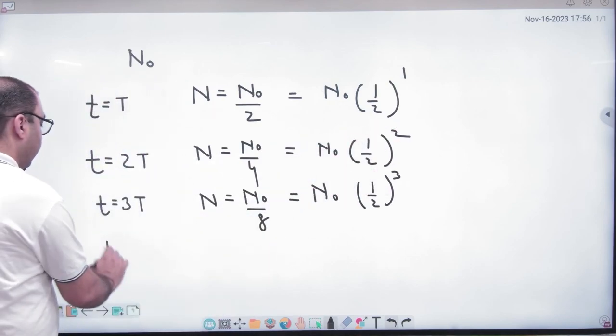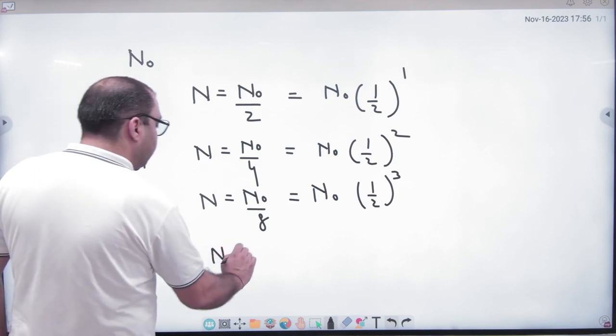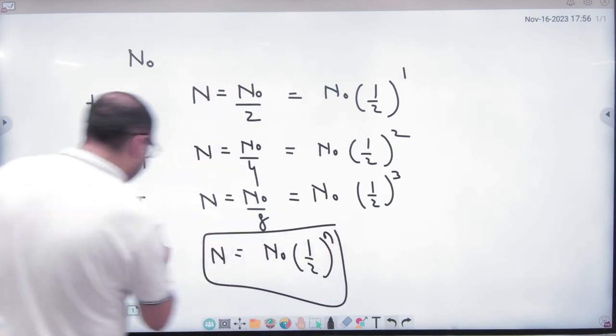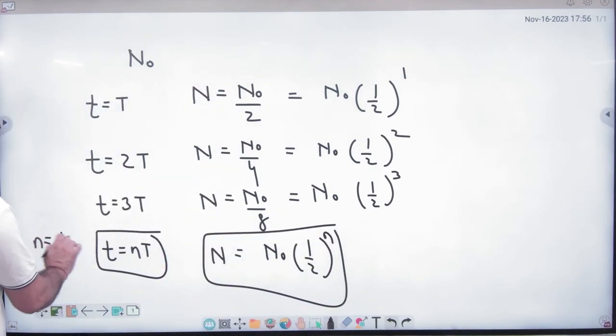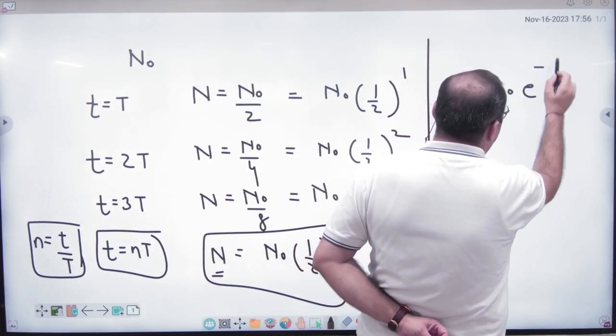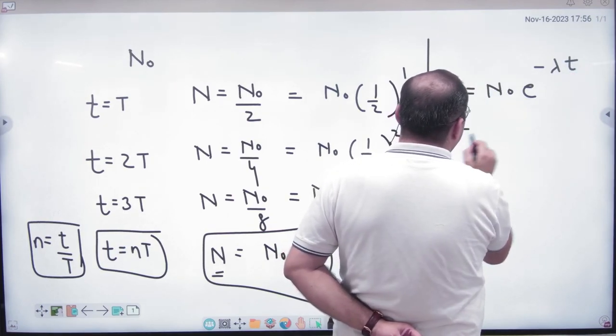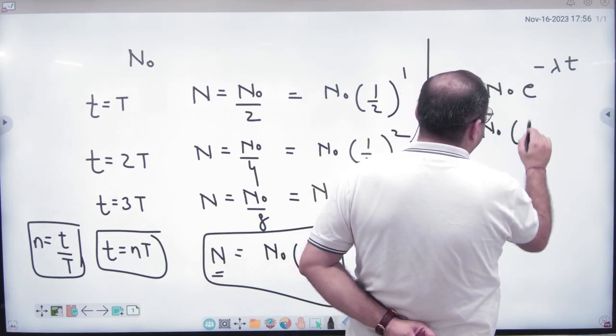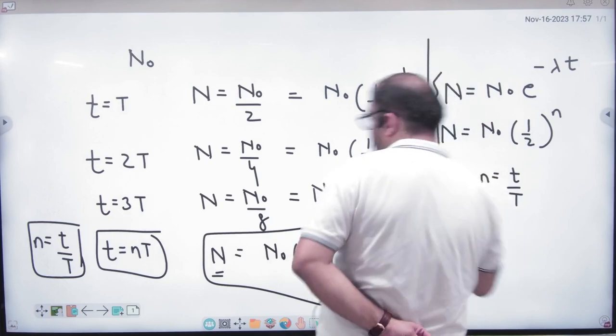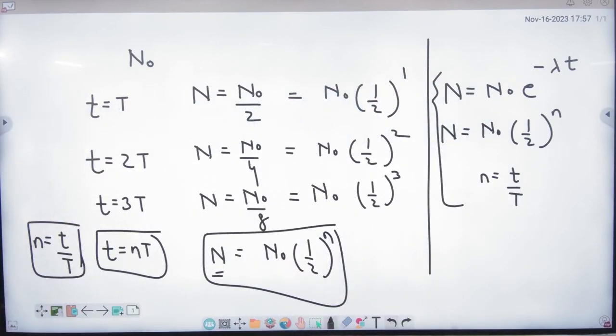In nth half life period, number of atom, number of atom left, this formula is right. The number of atom left is N₀ half raised to power n, where n is equal to small t divided by capital T. Please note this important is important.